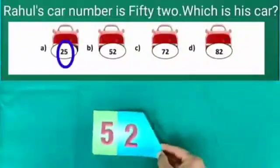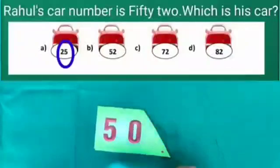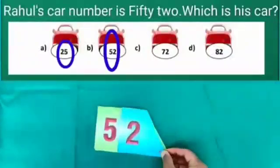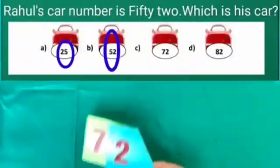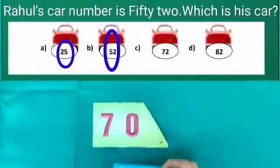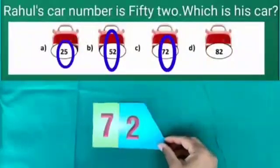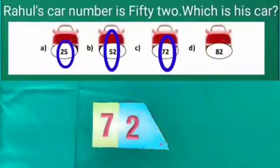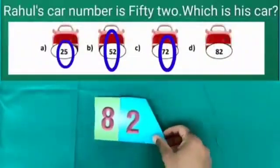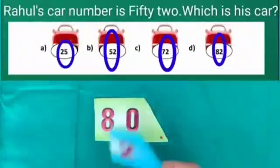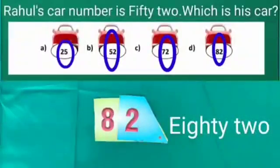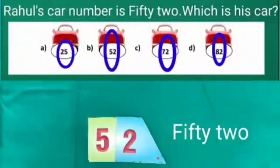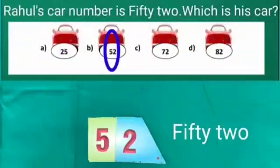Number of car of option B is 50 and 2 is 52. Number of car of option C is 70 and 2 is 72. Dear students, Rahul's car number is 52 which is our option B. Car given in option B is Rahul's car. So we will put a tick on option B.